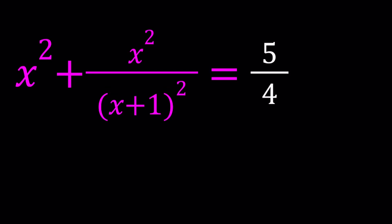Hello everyone, in this video we're going to be solving a rational equation. We have x squared plus x squared divided by x plus 1 squared equals 5 over 4, and we're going to be solving for x values - all x values, real and complex.